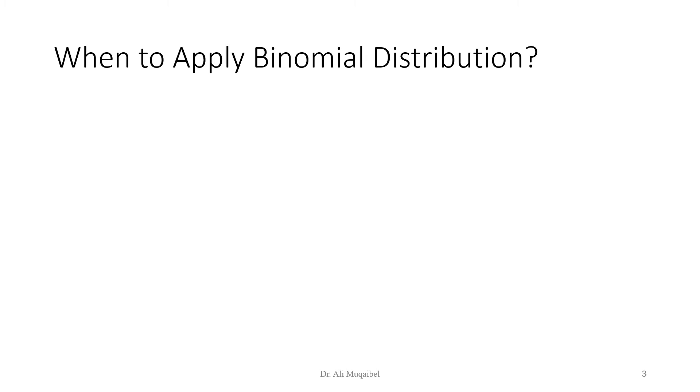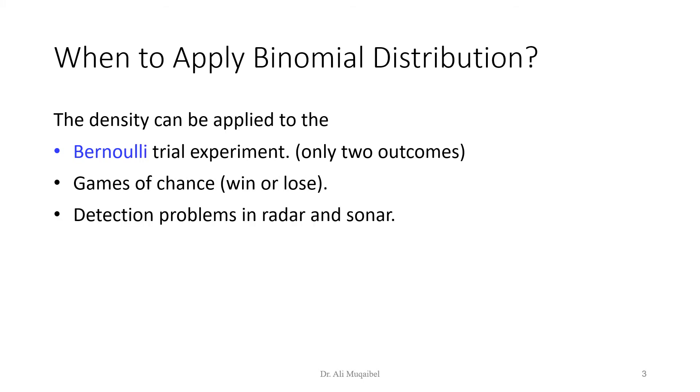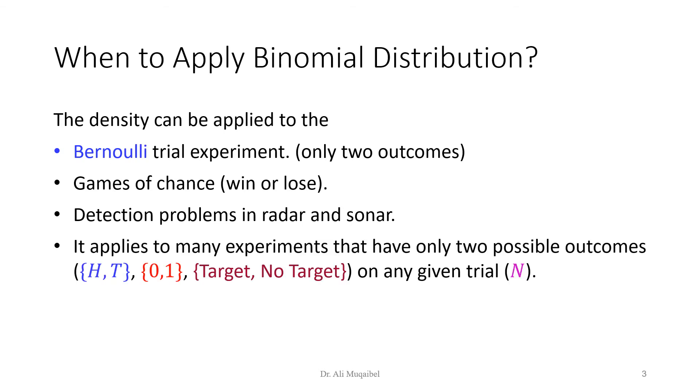When to apply binomial distribution? So I'm going to summarize again. We have covered the math. Now we have to make some sense. The density can be applied to the Bernoulli trial experiment, where we have only two outcomes. Game of chance, win or loss. Detection problems in radar, because you either detect or you miss, and sonar examples. It applies to many experiments that have only two possible outcomes. Head or tail, 0 or 1, target or no target, on any given trial n. So this is basically saying the same thing in a different way.